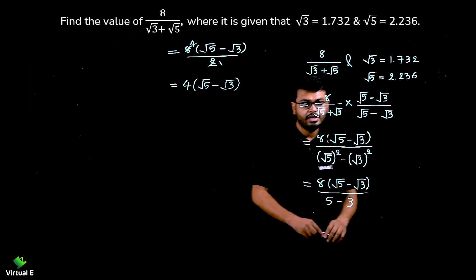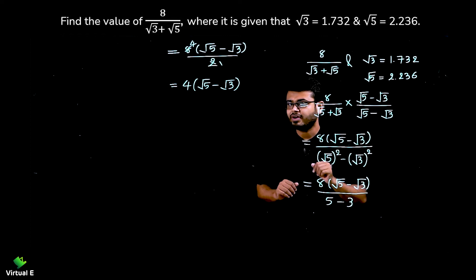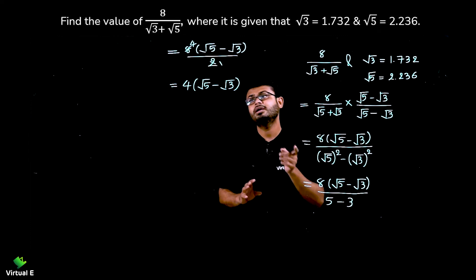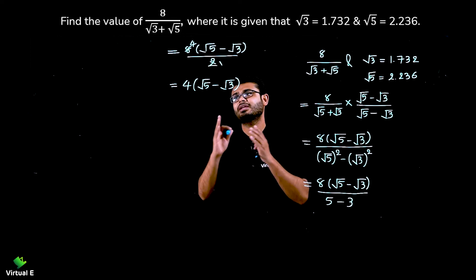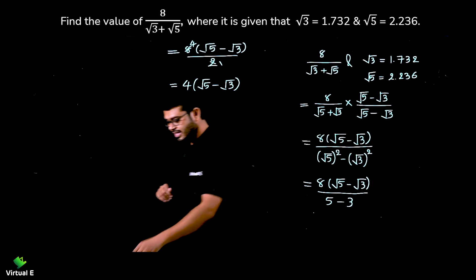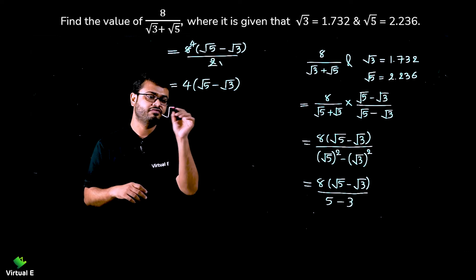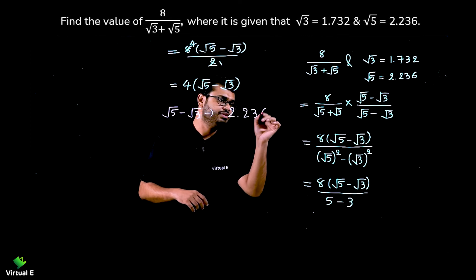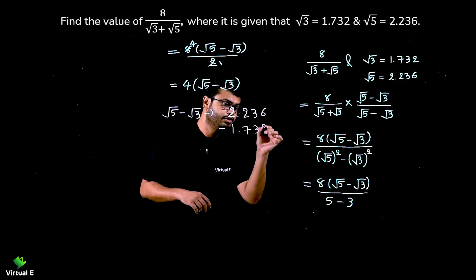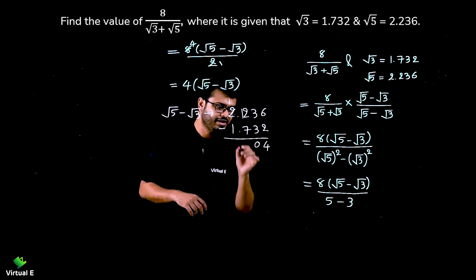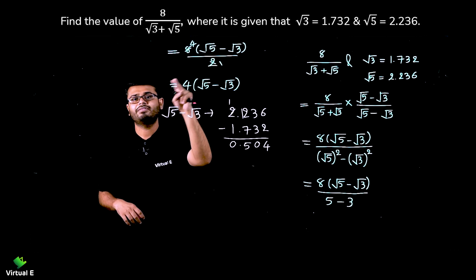After rationalization, we substitute the values of root 3 and root 5. The first step is always: rationalize the denominator, then substitute the value. Let's compute root 5 minus root 3 separately: 2.236 minus 1.732. Doing the subtraction: we get 0.504.